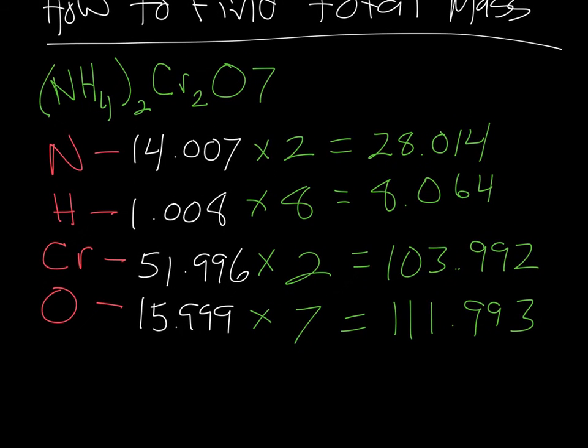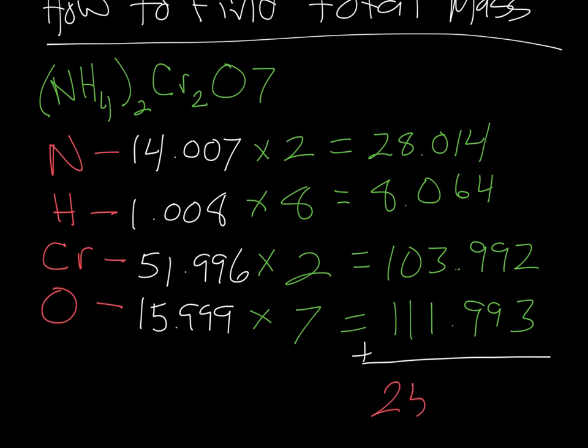Now that I have figured out the total mass of each element in the compound, I have a total mass of nitrogen of 28, total mass of hydrogen of 8, total mass of chromium of 103, total mass of oxygen of 111. Now, I'm going to take those numbers and add them together, and that gives me a total mass of 252.063.